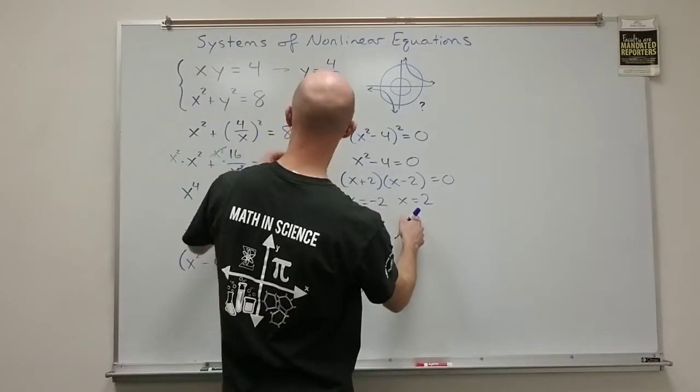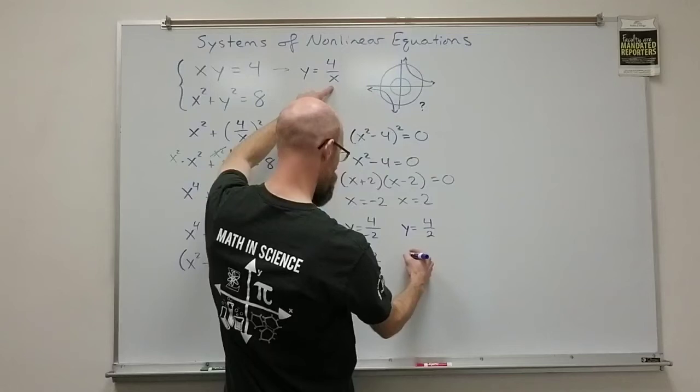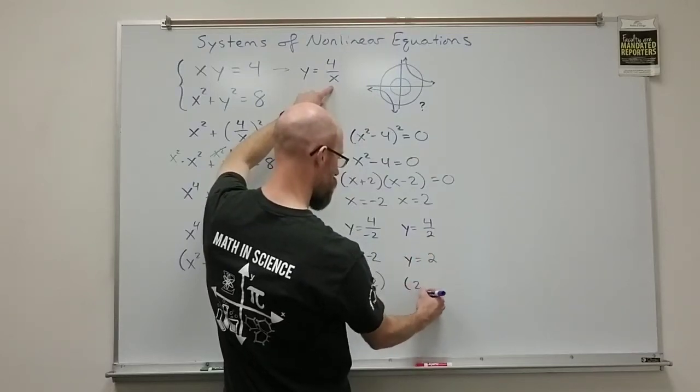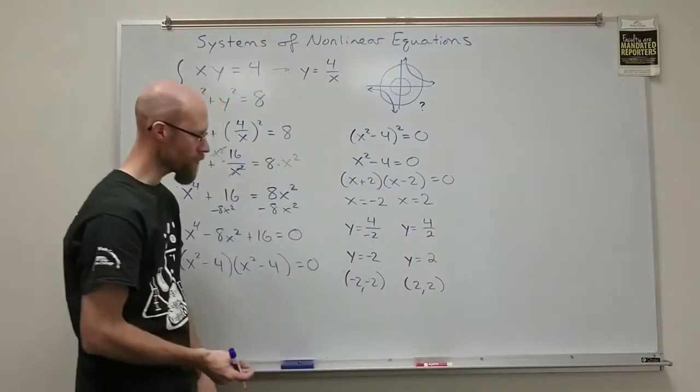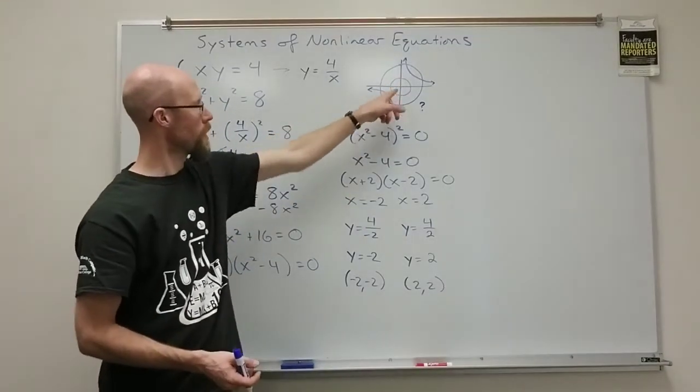And over here on the positive 2, if I plug that in, I get y equals 4 over 2, which is just 2. And that gives me the point 2 comma 2. So, I have two solutions. Not 0, not 4.